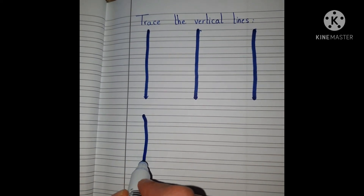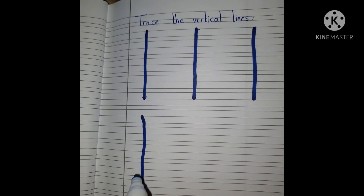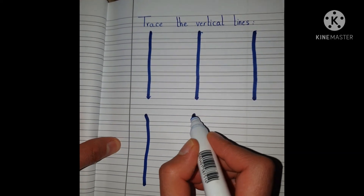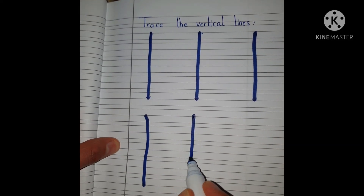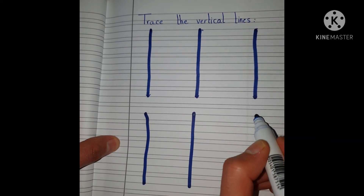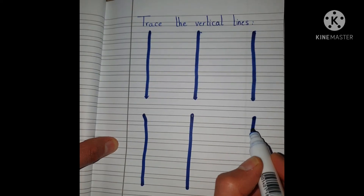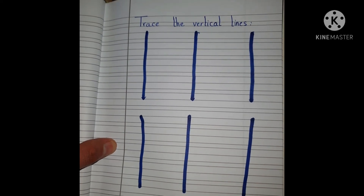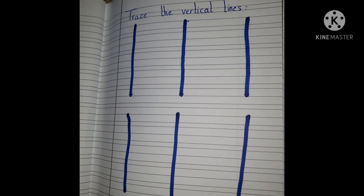Now let's draw vertical lines alone. Start from up to down, up to down. Great job! Goodbye.